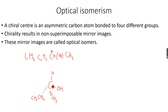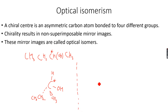So this carbon atom is attached to H, OH, CH3, and CH2CH3 — four different groups — and therefore it is a chiral center. It will exist as optical isomers. We draw a mirror line and mark the chiral center with an asterisk to show that it is a chiral center.